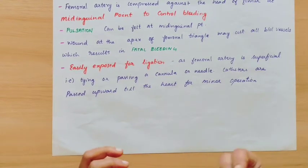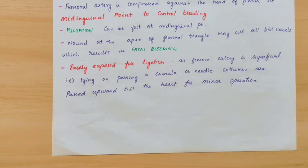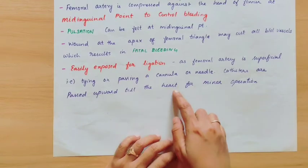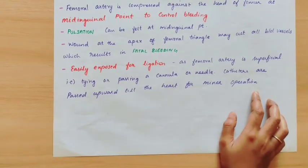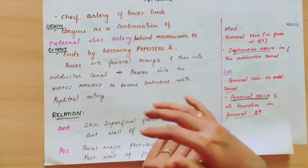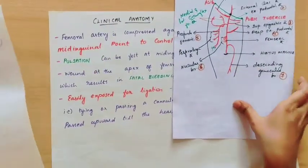The femoral artery can be cannulated with needles or catheters. In cardiac procedures, a catheter is passed through the femoral artery upward to the heart for minor operations or diagnostic procedures. So that is all about the femoral artery, covering origin, extent, course, relations, seven branches, diagram, and clinical anatomy.